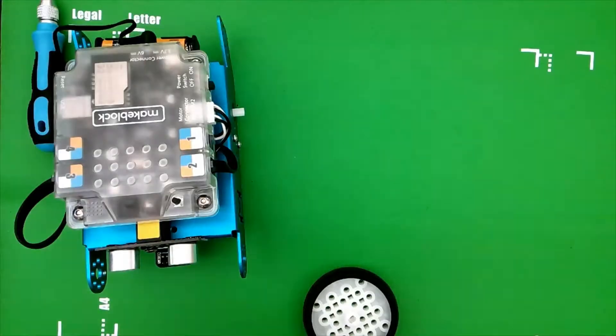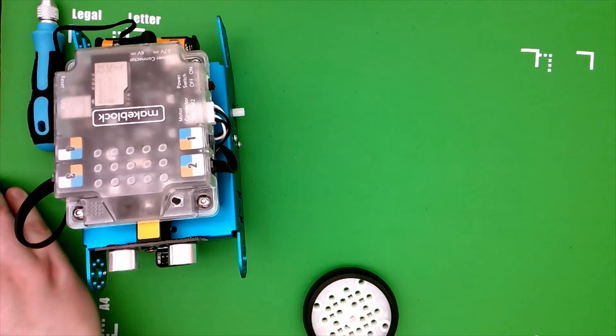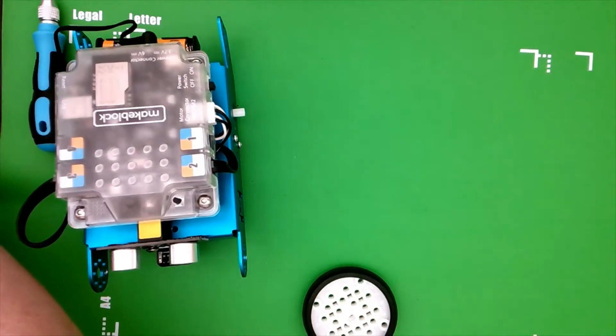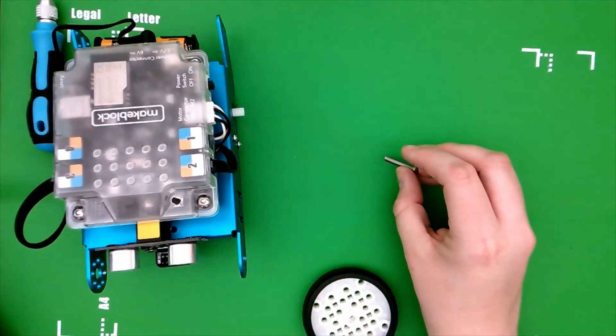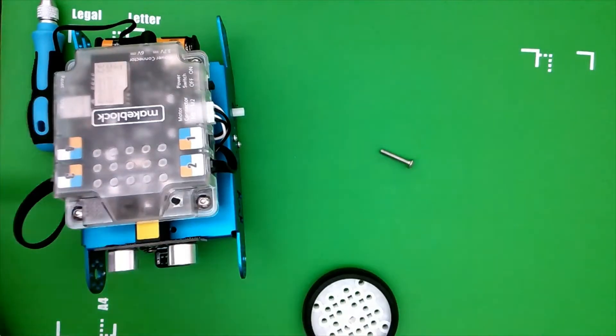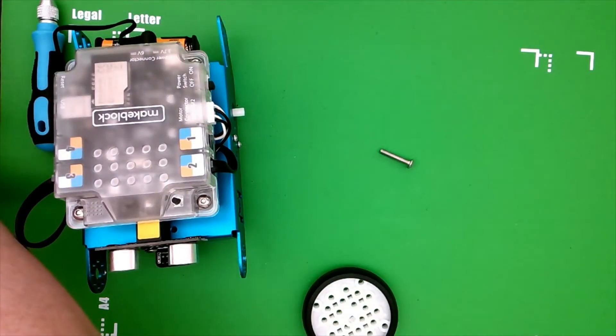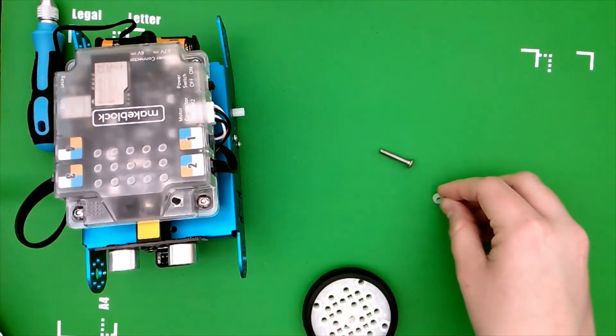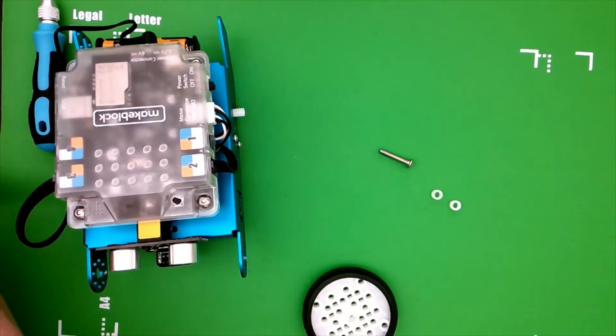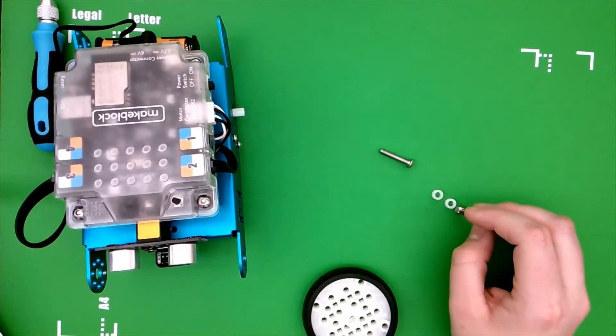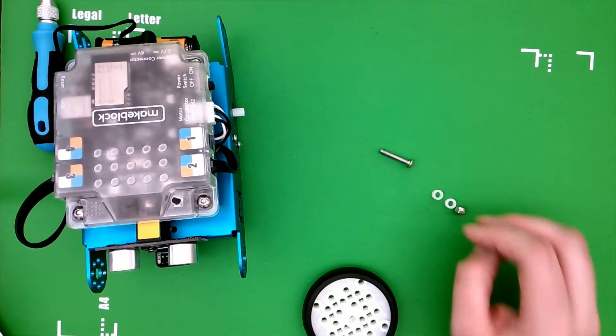So first I want to start with step number one. We'll need a 22-millimeter screw and two little plastic spacers, a lock nut, and then beam 108.